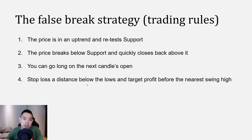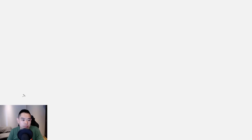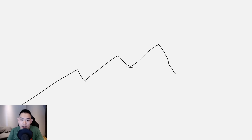Number three: you can go long on the next candle open. Number four: your stop loss is a distance below the lows, and your target profit can be just before the recent swing high. It looks something like this: market is in an uptrend, wait for the price to retest the area of support. Let it break below support and then quickly reverse back above it and close back above support. When that happens, you can enter on the next candle open with a stop a distance below the low. Target is just before the recent swing high.